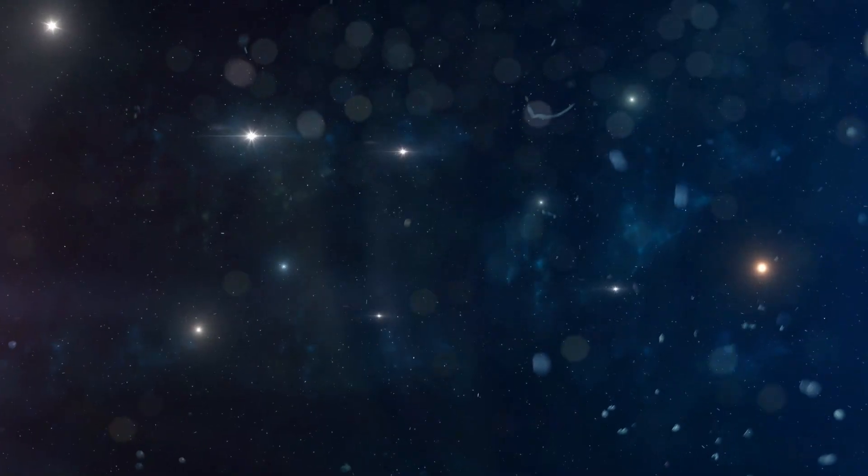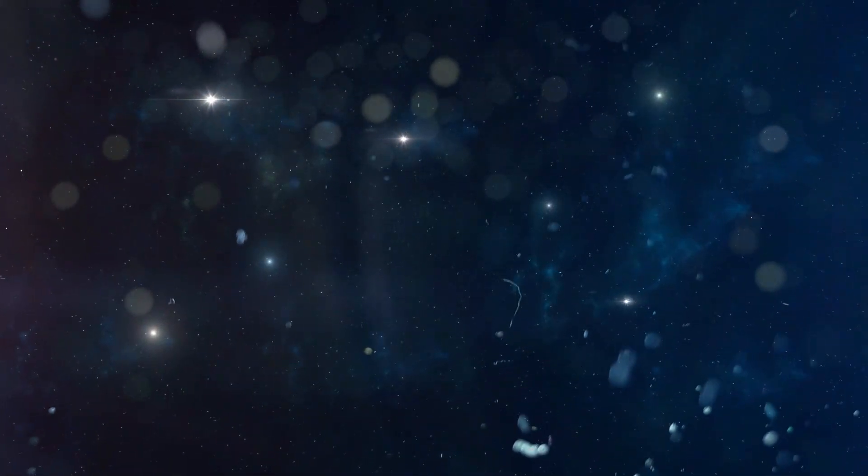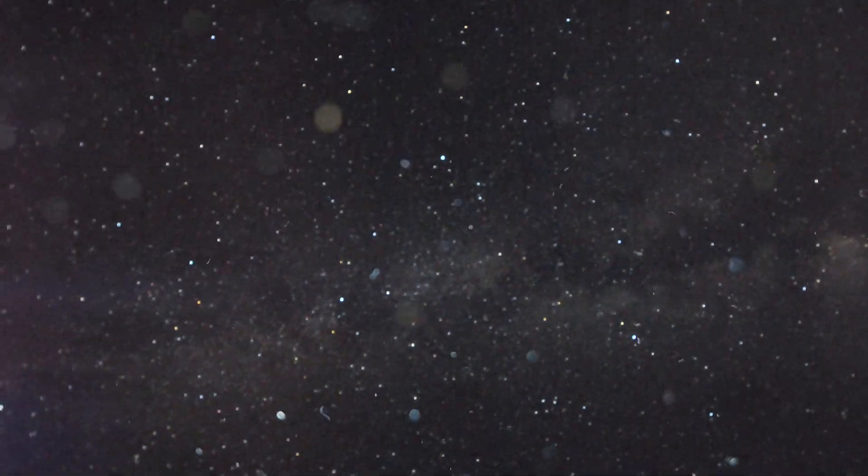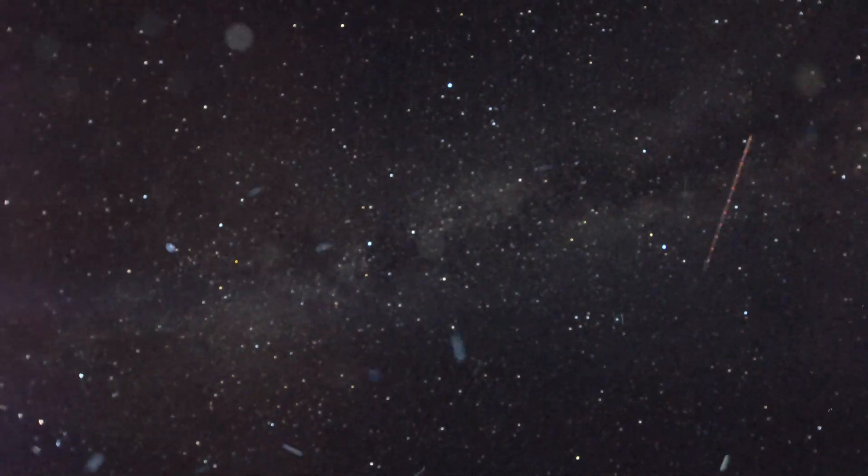You need to know that the Milky Way galaxy has got 200 billion stars. Most of those stars now we know have planetary systems. We estimate there are something like 20 billion Earth-like planets or potentially Earth-like planets in the Milky Way galaxy alone.